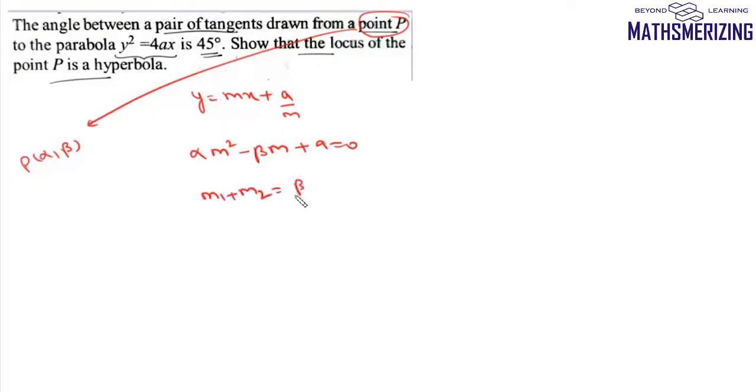Sum of roots is β/α, product of roots is a/α. The angle between the pair of tangents is 45°, so tan 45° = (m₂ - m₁)/(1 + m₁m₂).